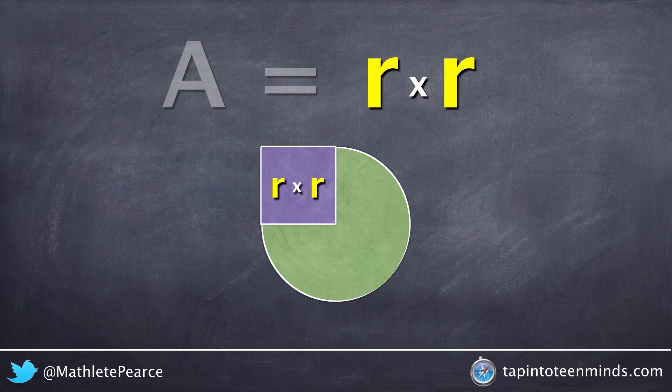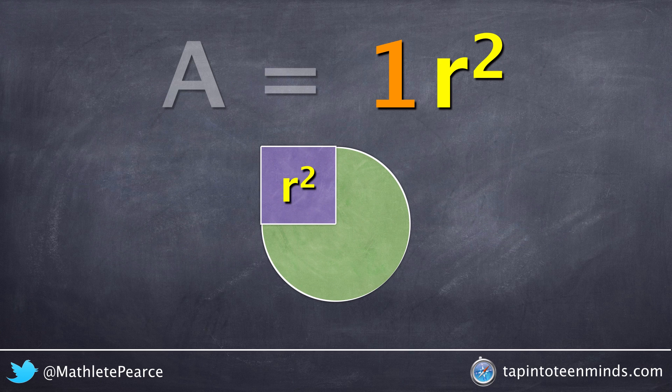And we can also show this as r squared, like we can see on the screen now. Also note that this is one r squared, which does not cover the entire circle.